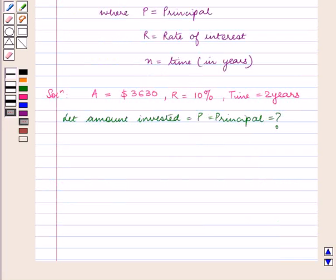So putting all the values we have, 3,630 equals P times (1 plus R by 10) raised to power N.